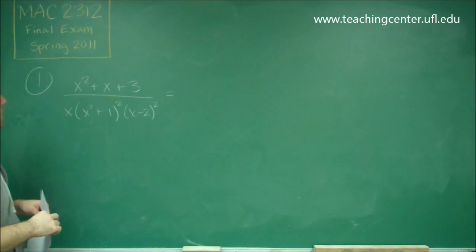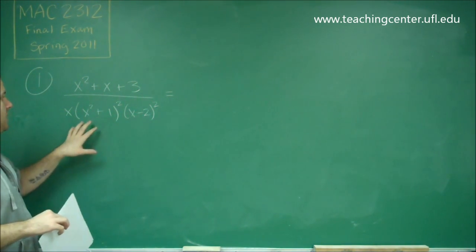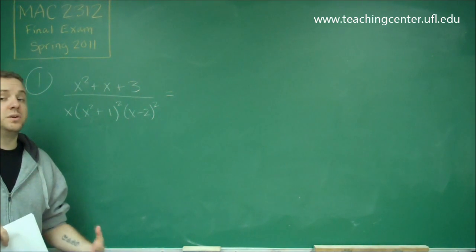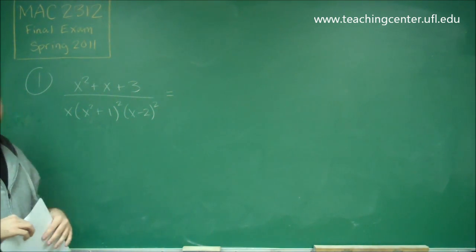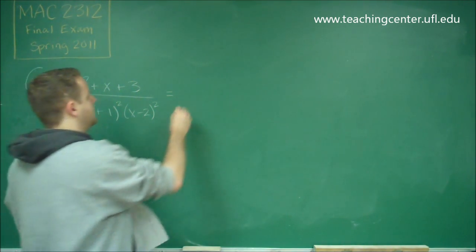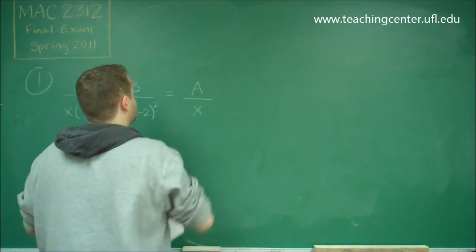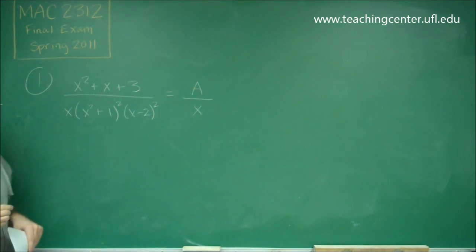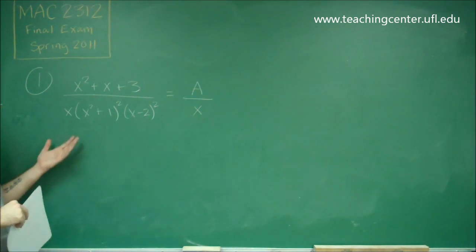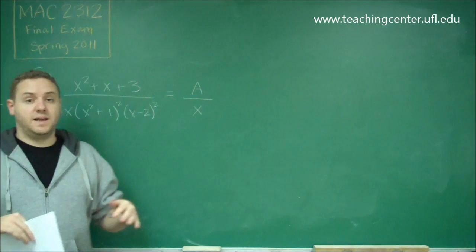We have three different factors in the bottom. Remember, when a given factor has a power higher than 1, there are some special things you need to do. First we just have x, so we're going to have one fraction: A over x. Remember that your numerator always has to be one degree lower than your denominator, so this one would just be a constant, A.